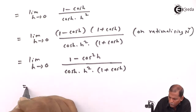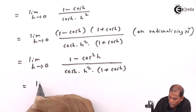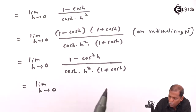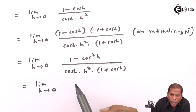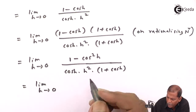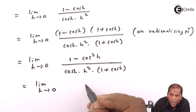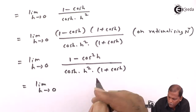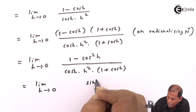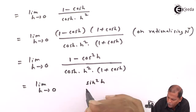Now applying the trigonometric identity sin²h + cos²h = 1, we get 1 - cos²h = sin²h. So the expression becomes sin²h upon cos h times h² times (1 + cos h) in the denominator.